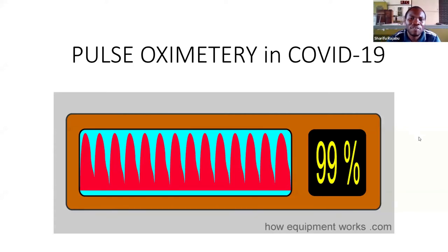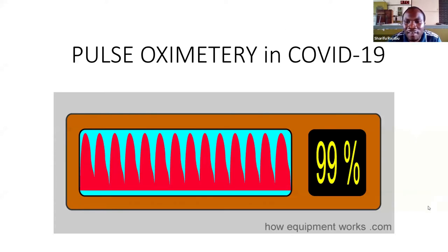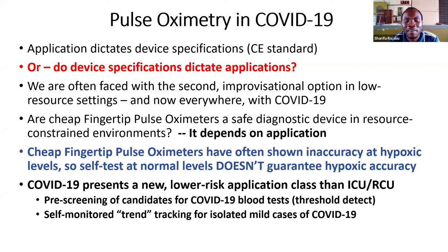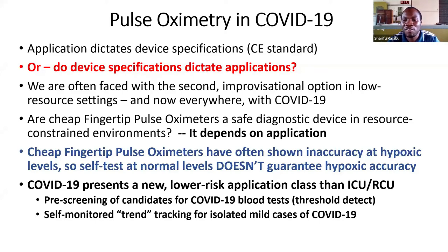It is my pleasure to have this opportunity to share what I have in the field of this COVID-19 disease. The pulse oximeter depends on different aspects. We have the fingertip pulse oximeter, the portable one, and the tabletop pulse oximeter. All of these differ in accuracy, and we have to find where each can be used and how we know which one is more accurate compared to the other.